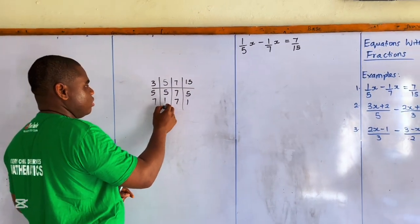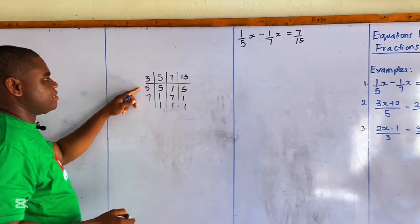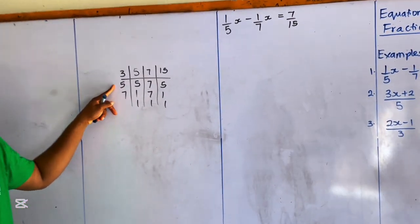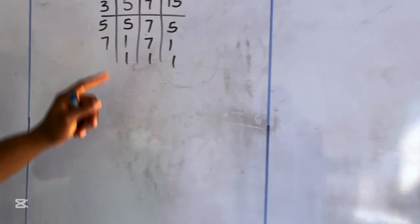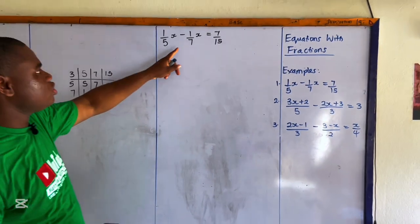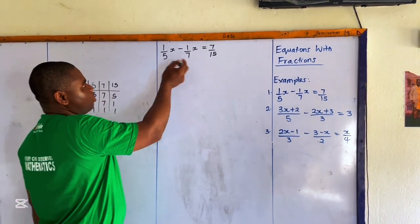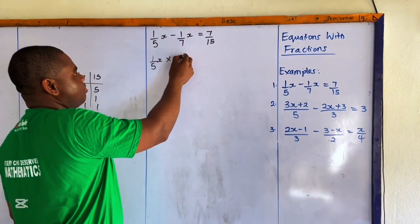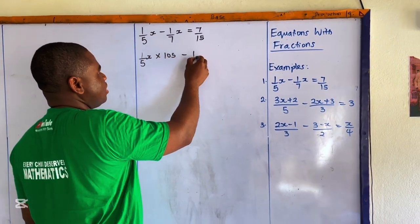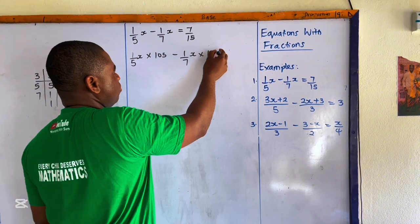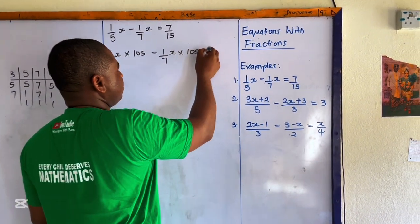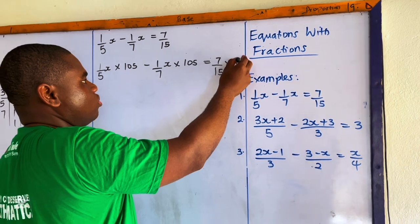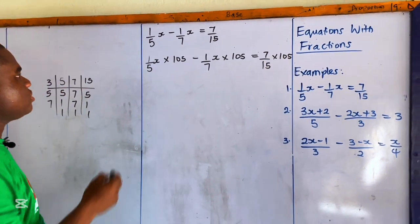So 3 times 5 is 15, and 15 times 7 is 105. We are going to multiply all terms by 105. So: 1 over 5x times 105, minus 1 over 7x times 105, is equal to 7 over 15 times 105.